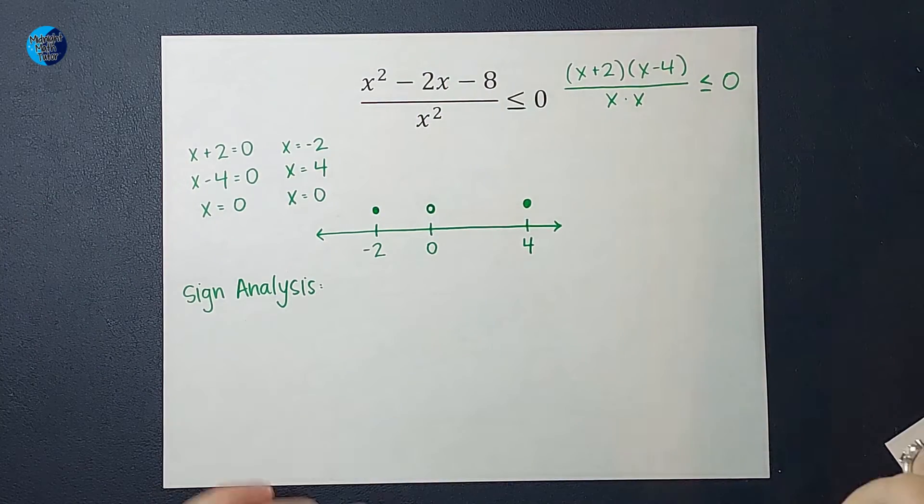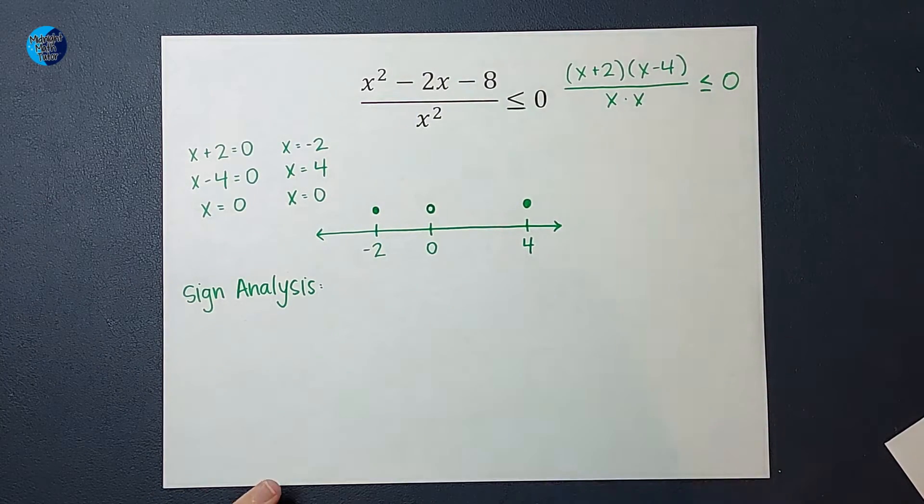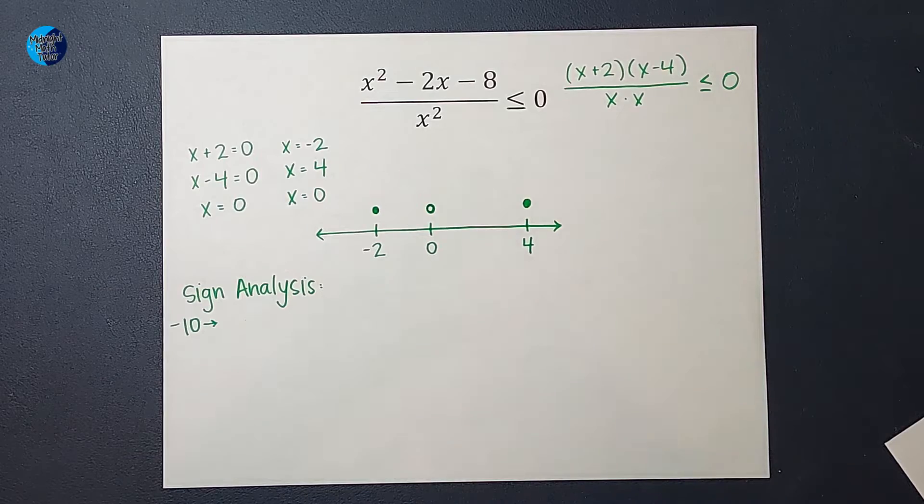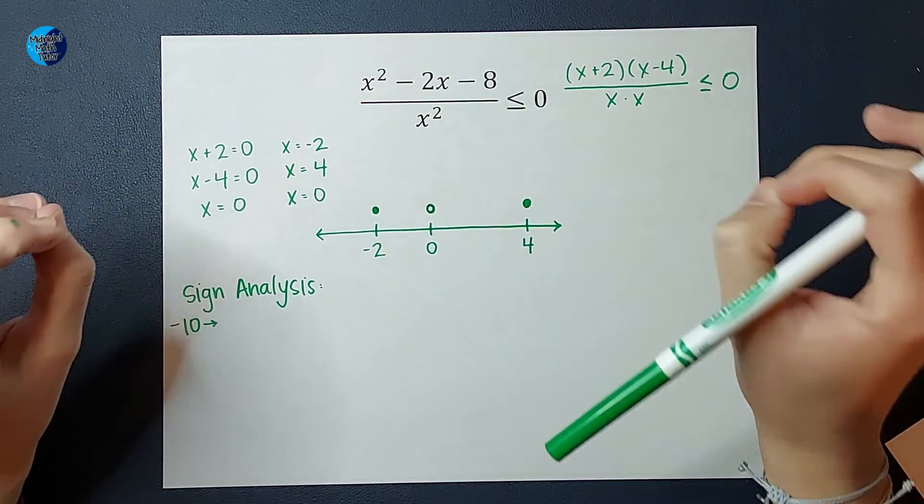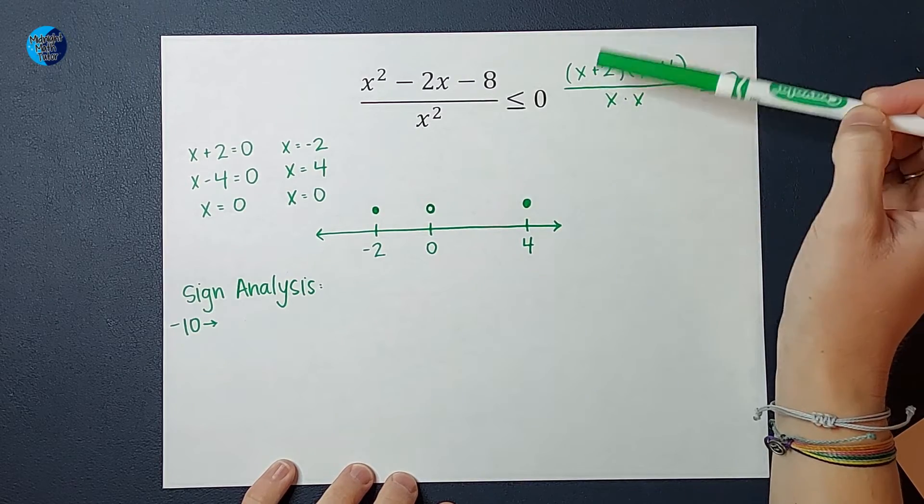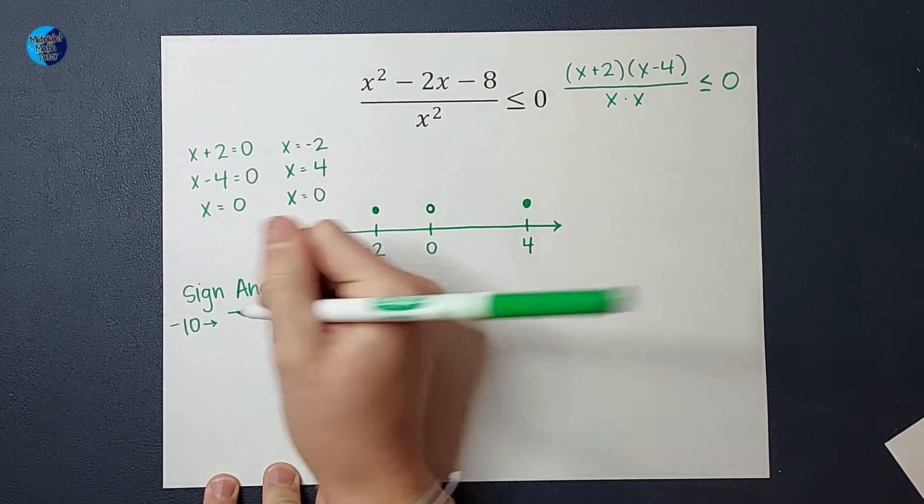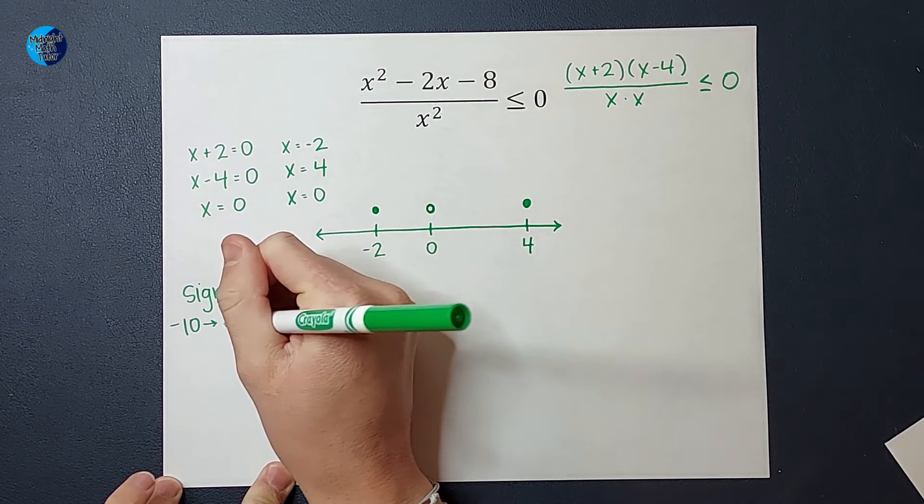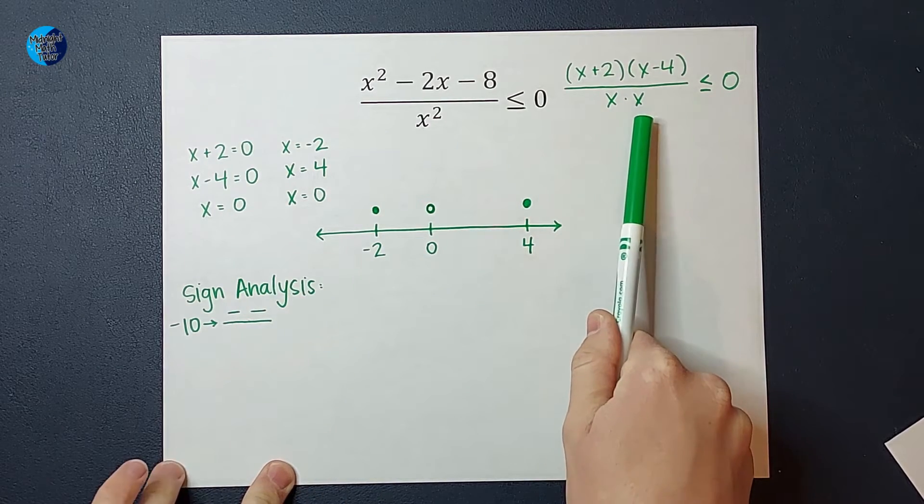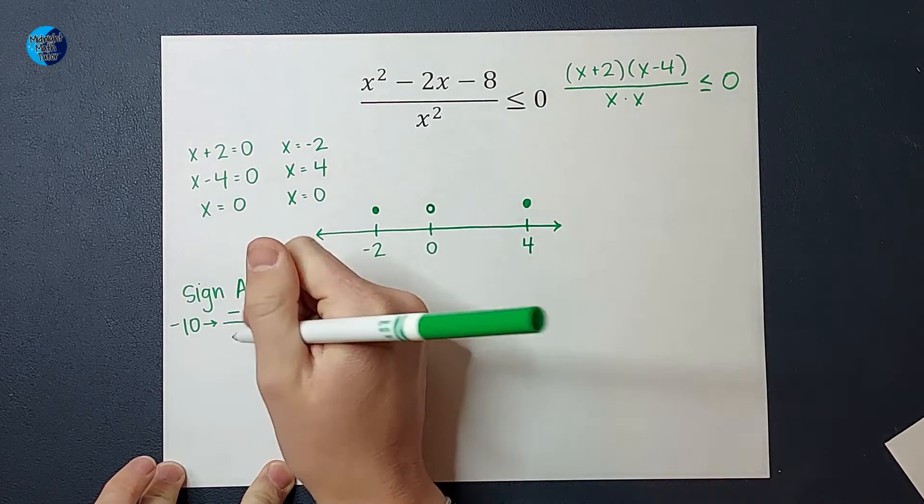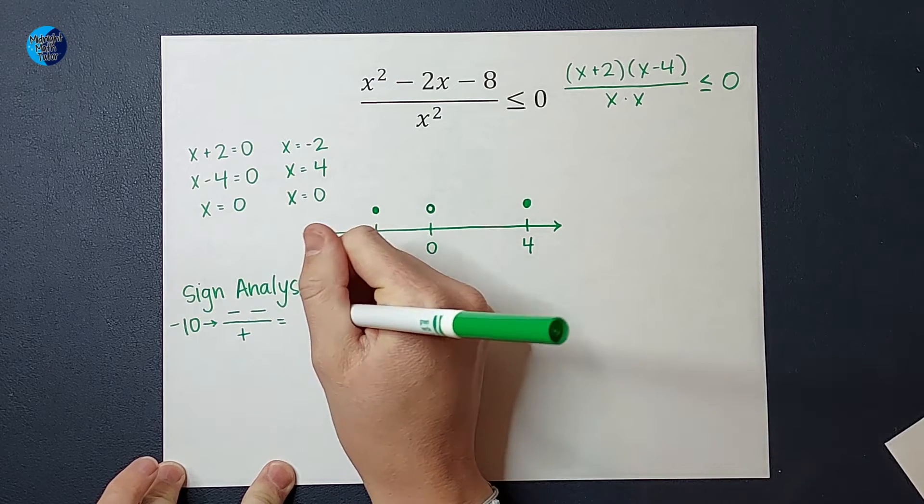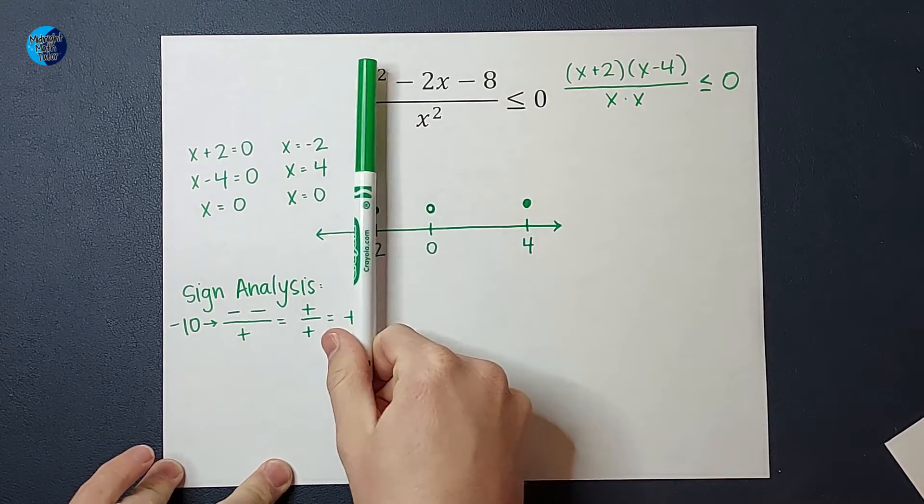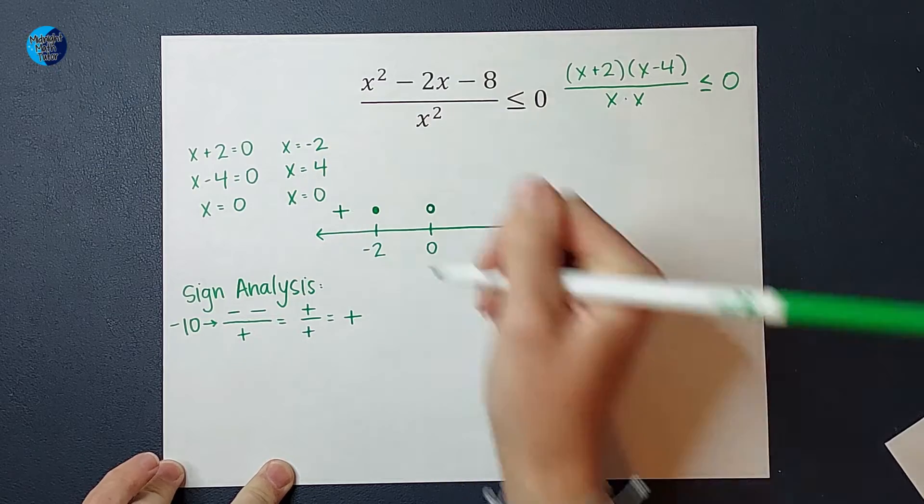So I need to pick a number less than negative 2. I could pick literally any number less than negative 2. Let's just pick negative 10. So when I plug in negative 10, remember, I'm not too worried about my number answer. I just want to know if it's positive or negative. So if I plug in negative 10 for x, I'm going to get negative 10 plus 2, which would be a negative number. If I plug it in here, negative 10 minus 4, that would also give me a negative number. Then on bottom, I would have negative 10 times negative 10, which two negatives make a positive. So I'd have a positive on bottom. Negative times a negative on top would be a positive over a positive, which would end up being positive. So this region to the left of negative 2 is going to be positive.